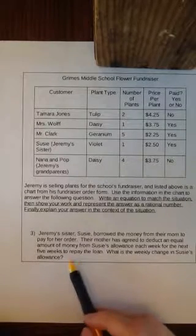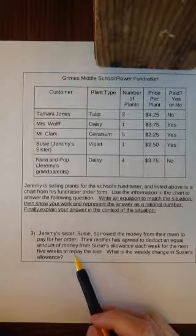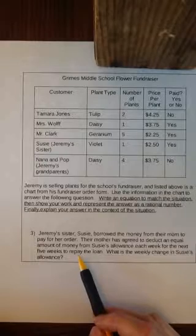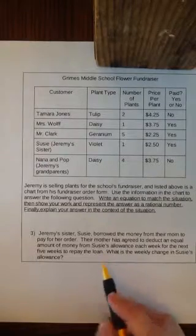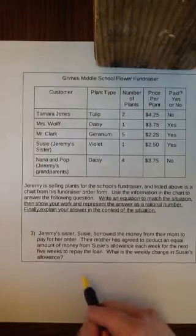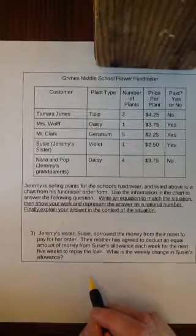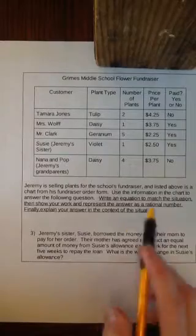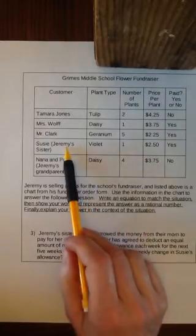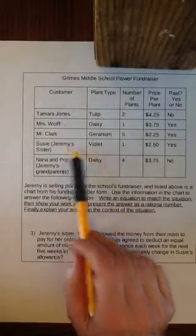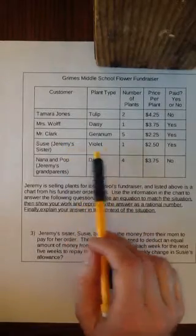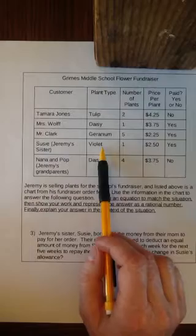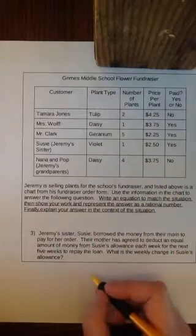As I'm reading this, I have a total that appears to be divided into equal amounts, so I'm going to make a division problem. Up here it says Susie is Jeremy's sister, and she bought one violet for $2.50.